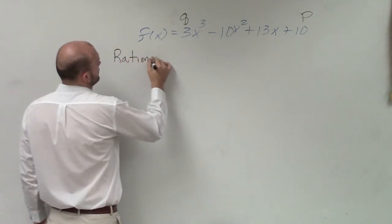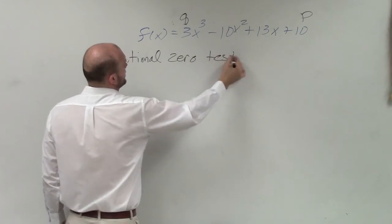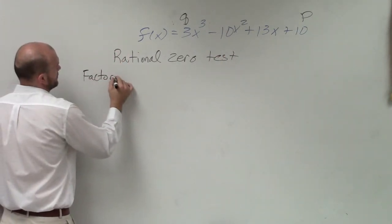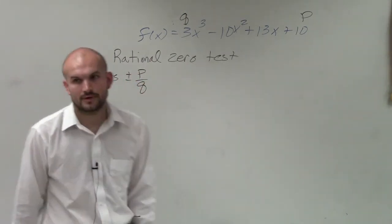So what we're going to be doing for the rational zero test is simply what we're going to be doing is taking the factors plus or minus of p over q.